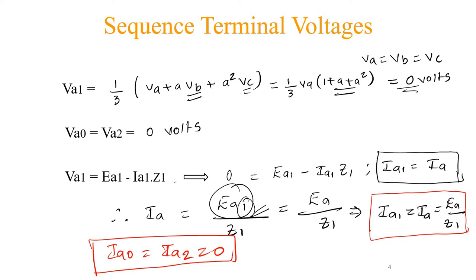We are discussing shunt faults. In shunt faults, the single line-to-ground fault, double line-to-ground fault, and line-to-line fault fall under the unsymmetrical fault category, while the three-phase fault alone comes under the symmetrical fault category. Even before derivation, we know that the three-phase fault is a symmetrical fault where the system remains in a balanced condition and will have only positive sequence components.